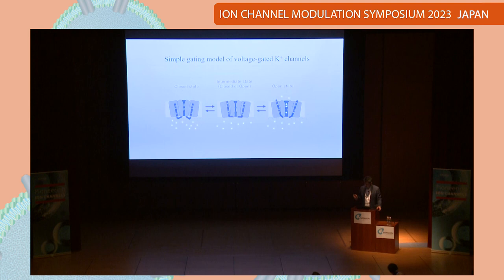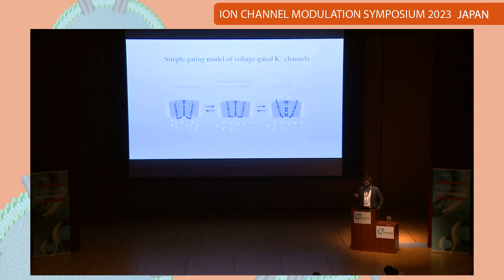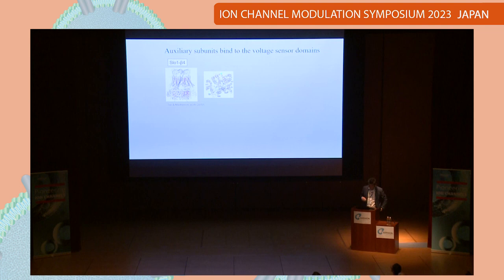This is a simple gating model of voltage-gated potassium channels. There is a closed state and a fully open state. But because of the step-by-step movement of the S4 segment, there should be some intermediate states between the closed state and open state. These intermediate states can be either closed or open, depending on the channel.